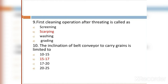MCQ 10: The inclination of belt conveyor to carry grain is limited to: Option A: 10 to 15. Option B: 15 to 17. Option C: 17 to 20. Option D: 20 to 25. The right answer is 15 to 17.